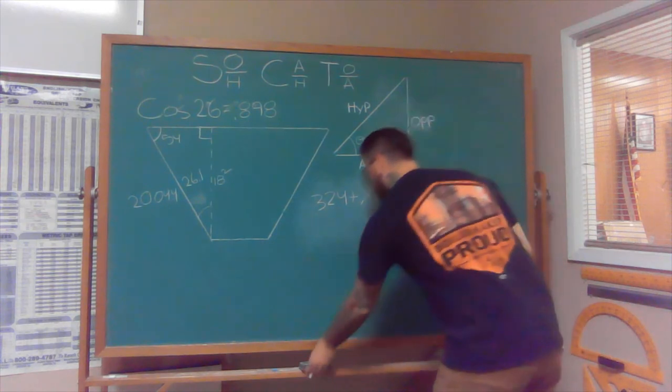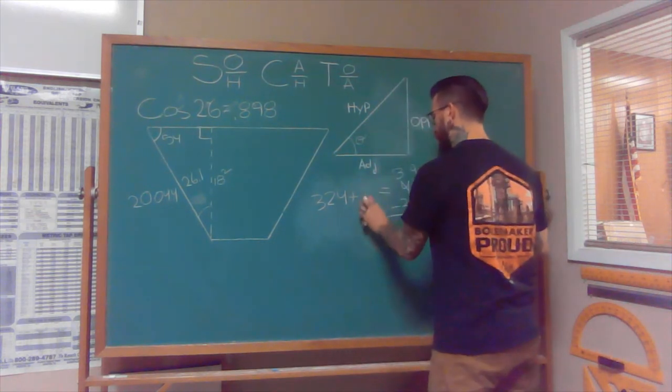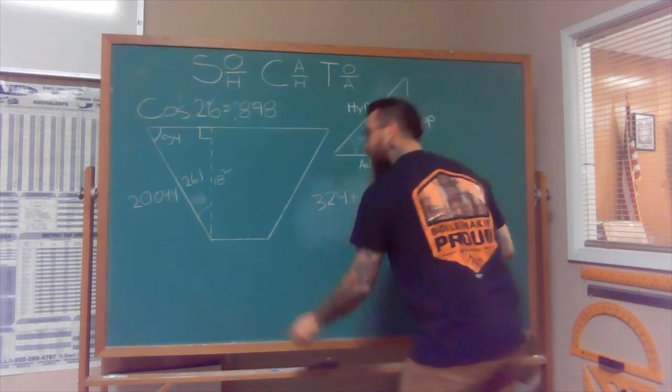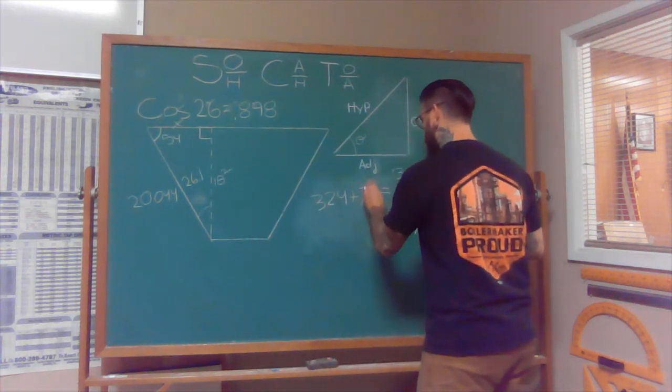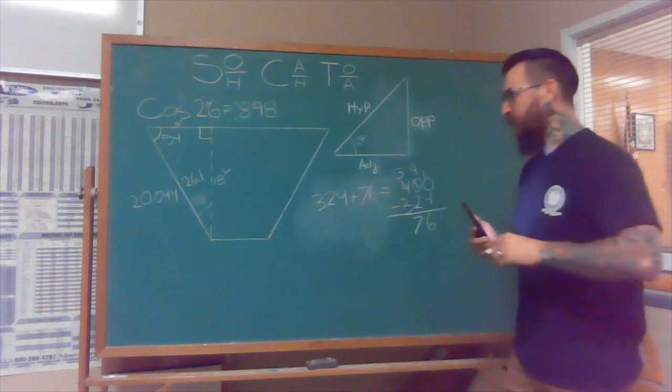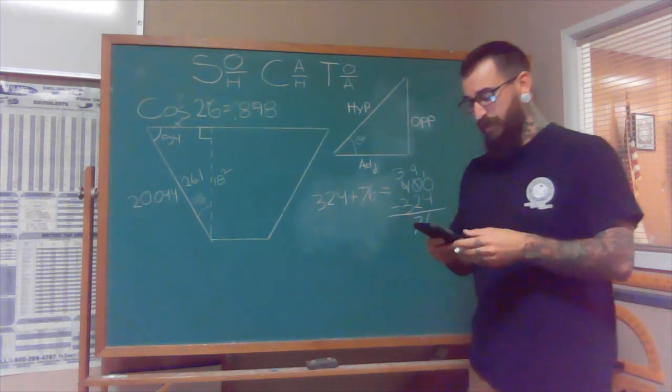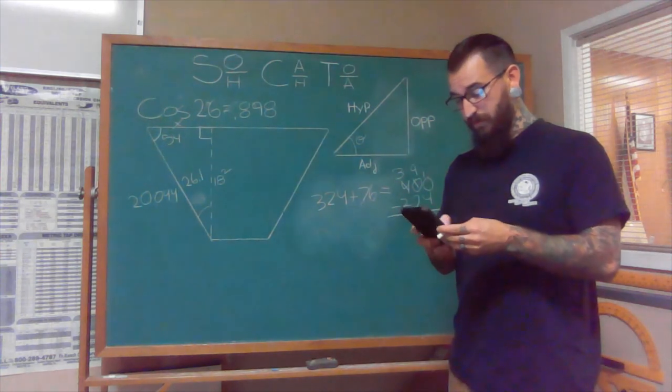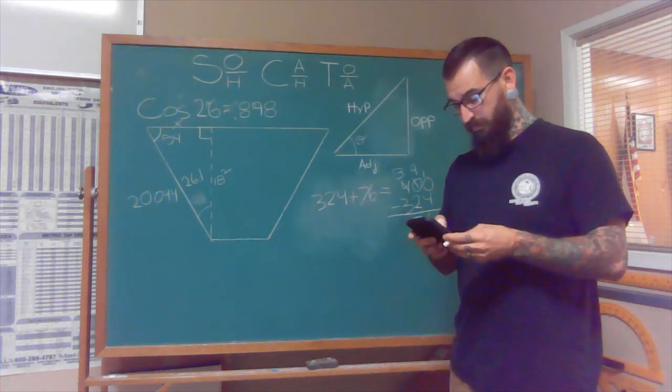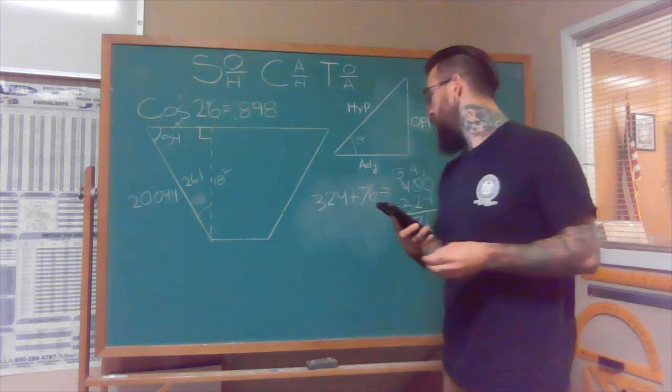So it's telling us that the squared amount of this leg right here is going to equal 76. And now please keep in mind, that's the squared version of it. So now we have to find out what the square root of 76 is. And that is 8.71.